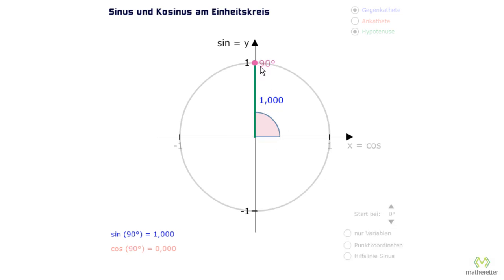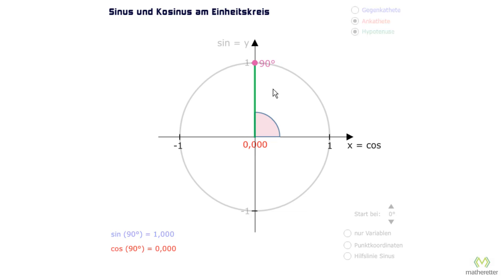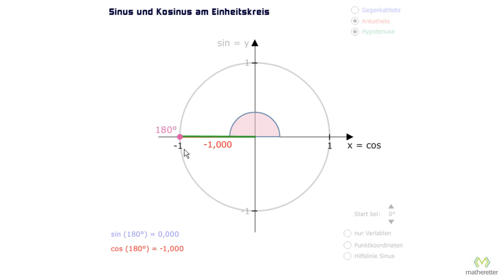So sine of 90 degrees is 1, and the sine of 90 plus 360, so sine of 450 degrees is also 1. It's the same for cosine; the cosine of 180 degrees is negative 1. If we now add 360 to 180, so we go around again, we get to 540 degrees. And the cosine of 540 degrees is negative 1 again.